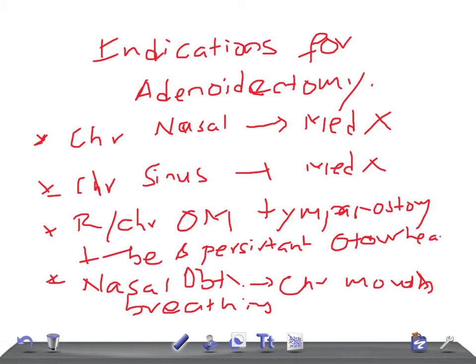One indication where you can do both tonsillectomy and adenoidectomy is upper airway obstruction secondary to hypertrophy resulting in sleep disordered breathing and its complications. So this is a brief discussion about the indications for adenoidectomy — thank you so much for watching, take care.